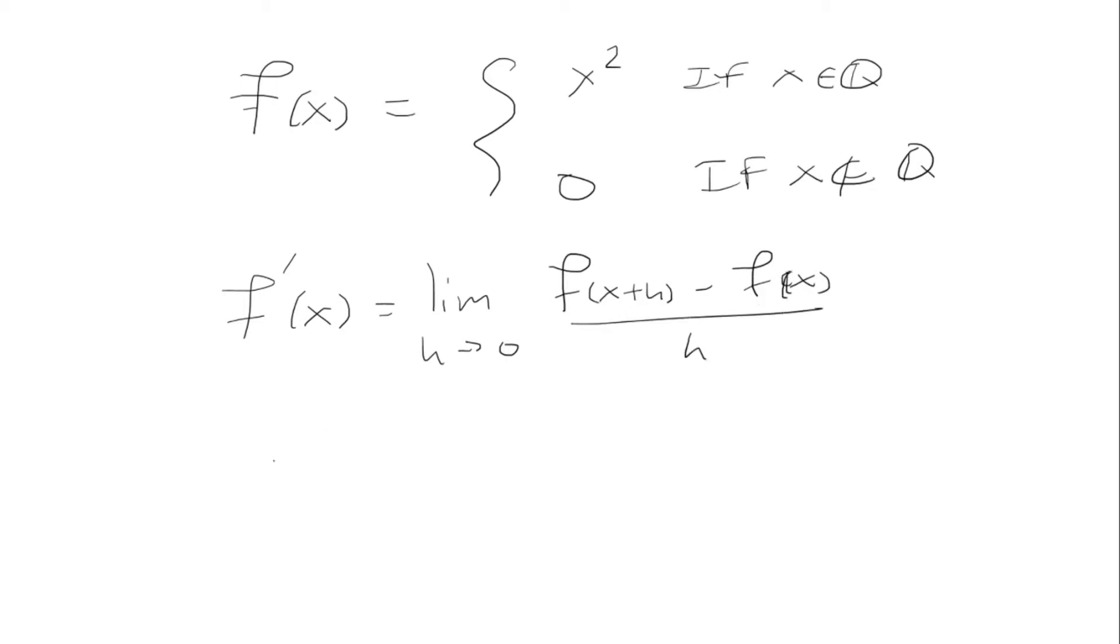So we're interested in looking at x equals 0. We're going to substitute x equals 0 here, and so we get f of h minus f of 0 all over h.